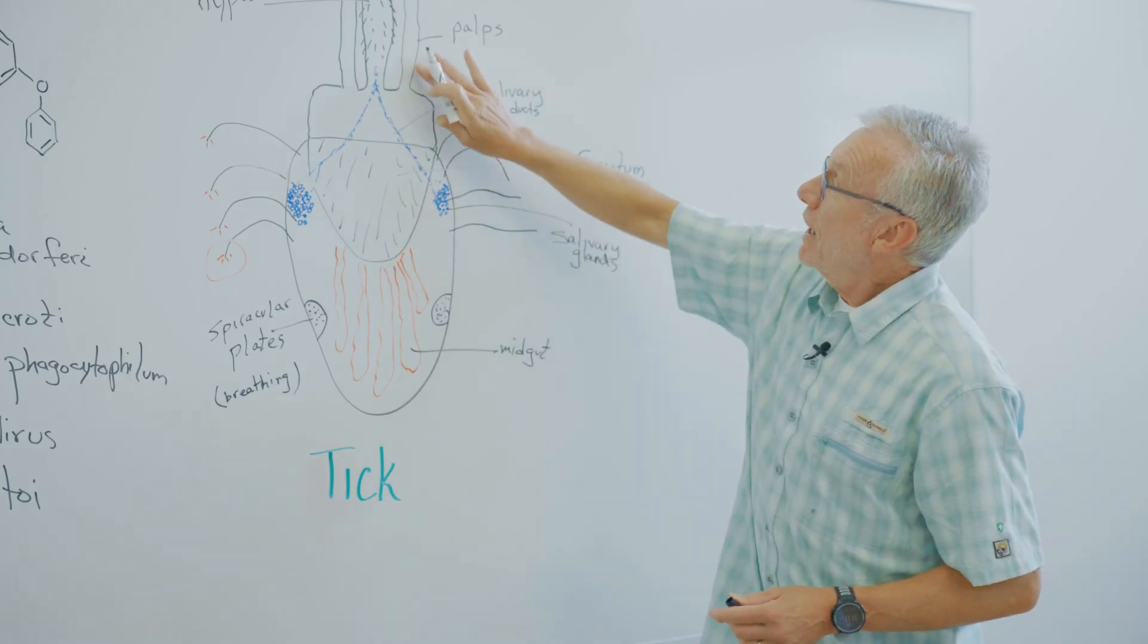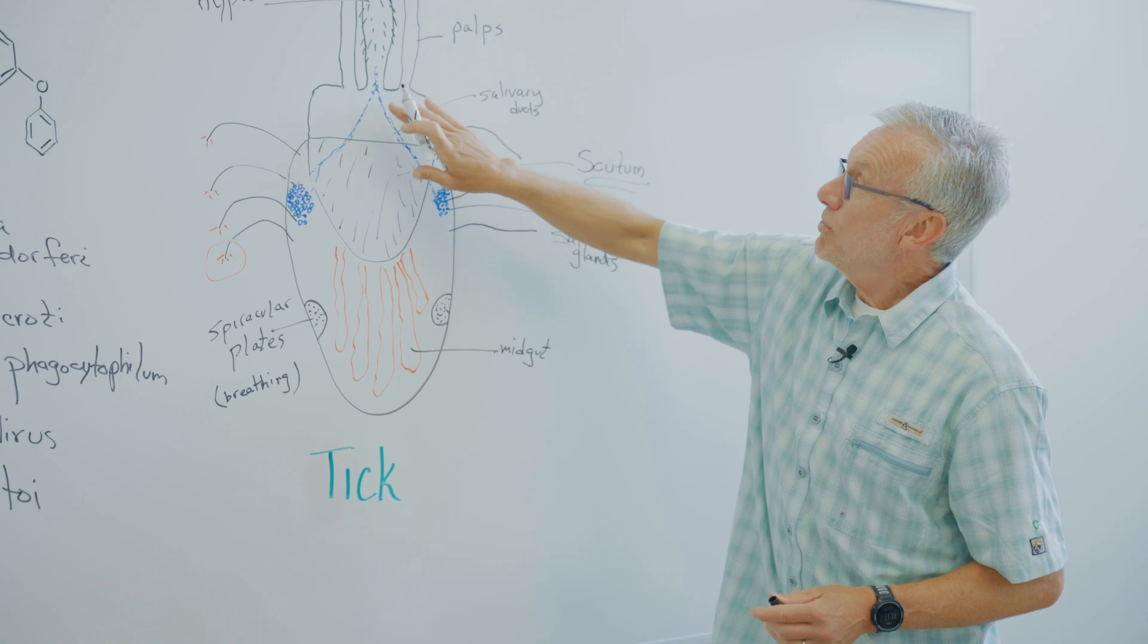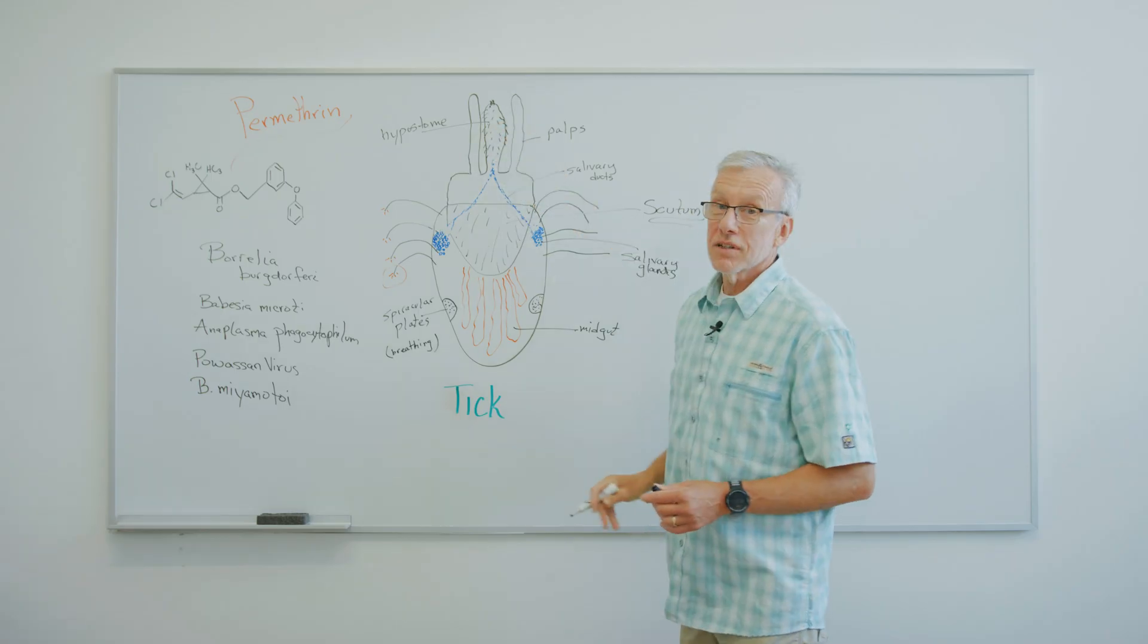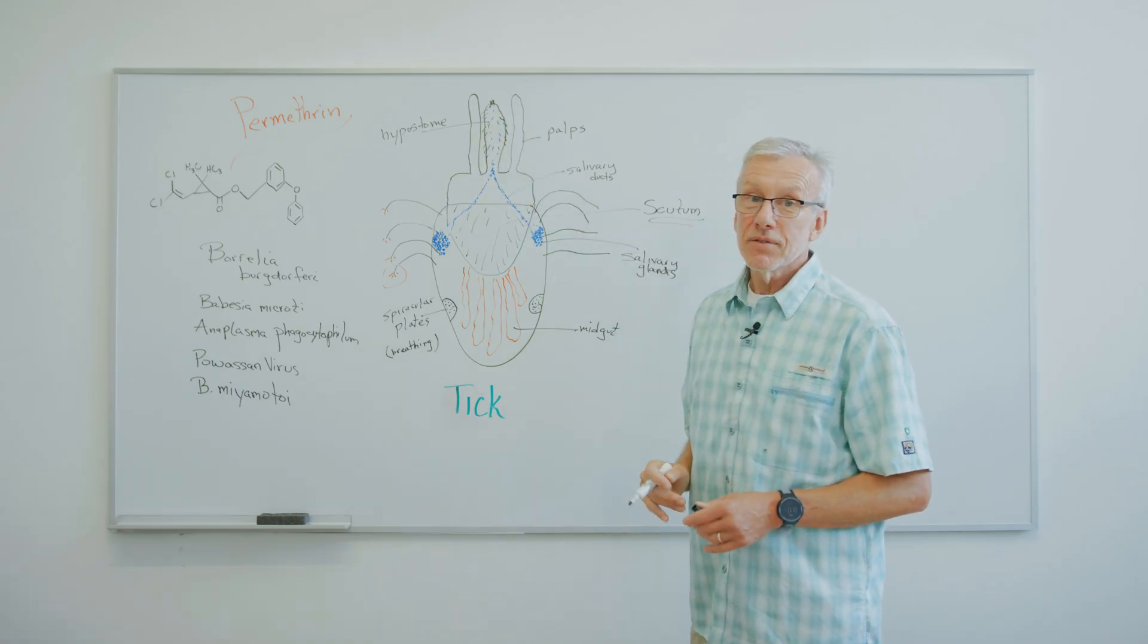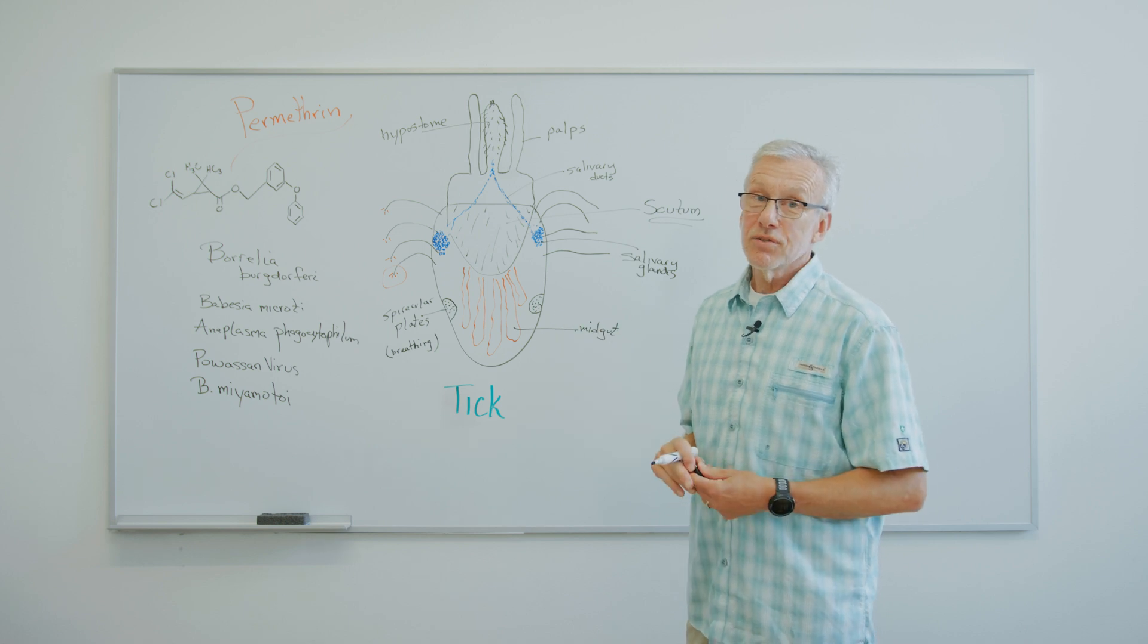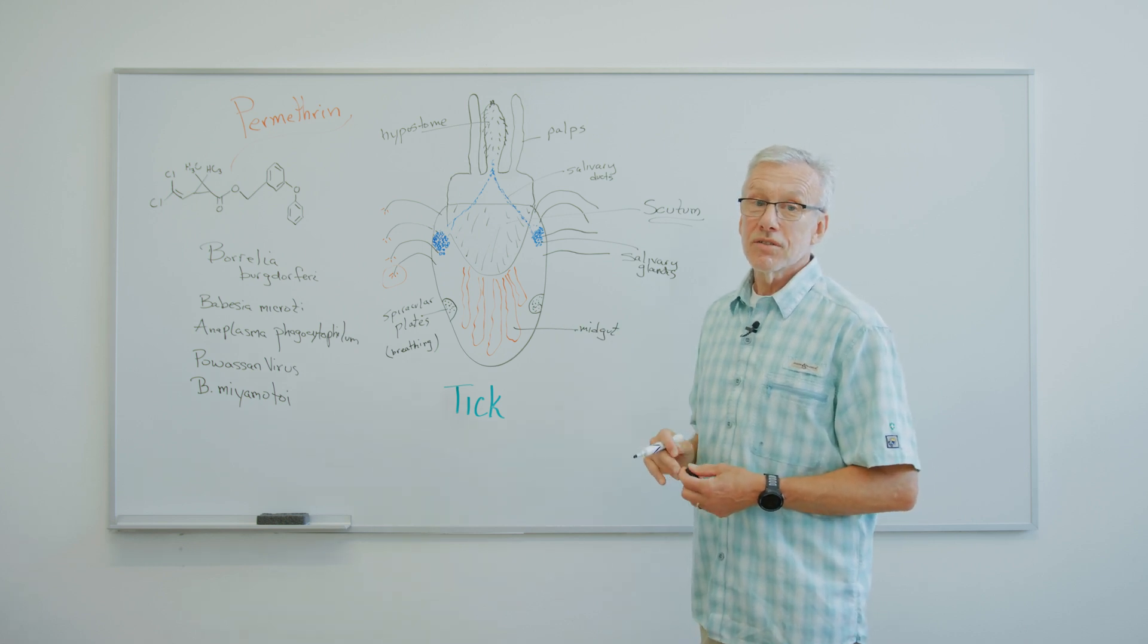These things are called palps. They're part of the head capsule, but they're really there to protect the hypostome because if something happens to the hypostome, of course, the tick isn't able to do what it's supposed to do, which is to feed on blood.